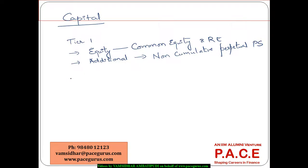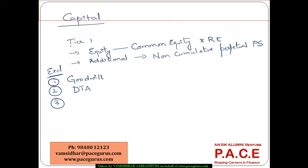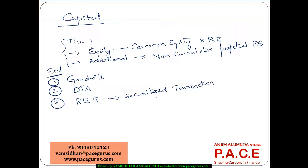If any such instruments are there, they go as part of additional Tier 1. Remember, Tier 1 should also have some adjustments. Any goodwill is not included as part of the Tier 1 capital — anything taken as goodwill needs to be excluded. Any deferred tax assets need to be excluded from the computation. Whatever the number is in the balance sheet, I should take out the impact of these things. Any change in retained earnings because of securitization that resulted in an increase in retained earnings, that portion should not be considered.